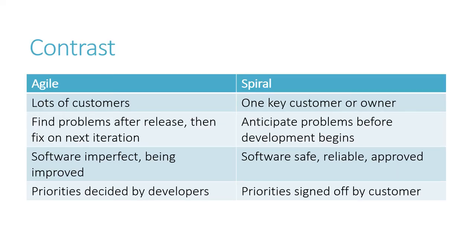If I can contrast the spiral method with the agile method: agile methodology has lots of customers, while the spiral methodology is typically that you're working for a key customer or software owner. In the agile method, there are always new problems left over after each stage — we find and fix them as we go. Whereas with spiral, we're aiming to identify and fix all the problems before we move on. In agile development, there's a backlog with a lot of items in it, and the sprint will just pick out some of those and quickly fix them. Whereas in spiral methodology, we're trying to keep the customer happy by taking longer but fixing more of the problems, until we've got software that's pretty reliable. So although they're both iterative with cycles of development, the feel of the two is quite different.